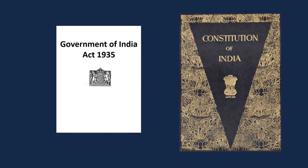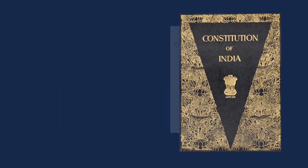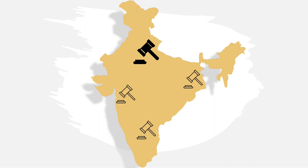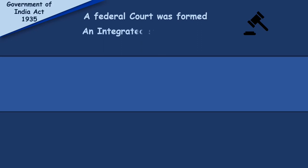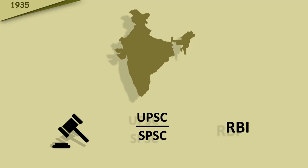You may know that our present-day constitution is inspired by many constitutions, but the majority of its provisions are taken from the Act of 1935. Under the Government of India Act of 1935, Indian judiciary was integrated for the first time through the formation of a Federal Court — much like the present-day Supreme Court — with all other courts made subordinate to it. This act also provided for public service commissions and the Reserve Bank, creating institutions fundamental to any nation.